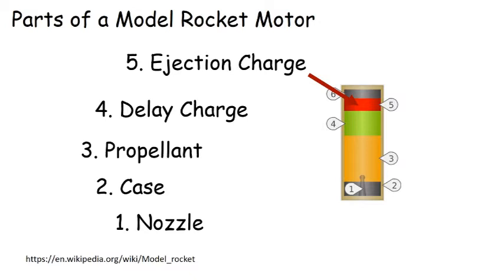So these are the basic parts of a model rocket motor. When we look at how the thrust of the motor changes in time, we'll be able to see some of these different stages.